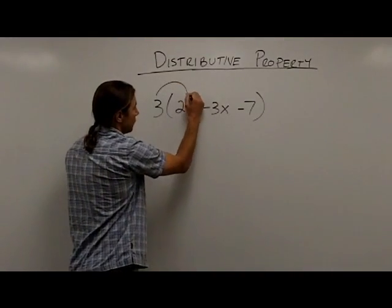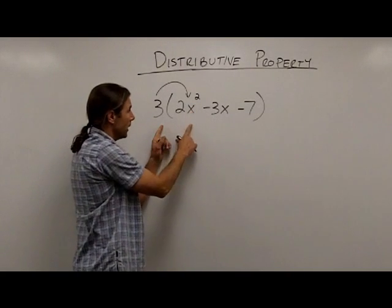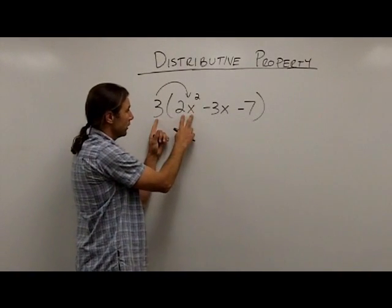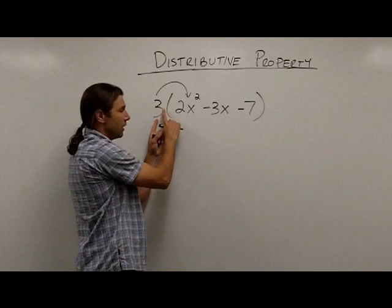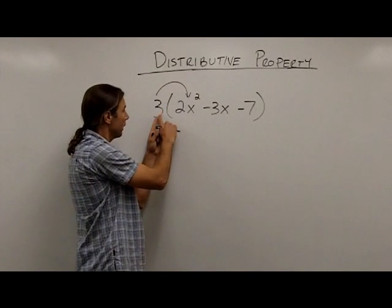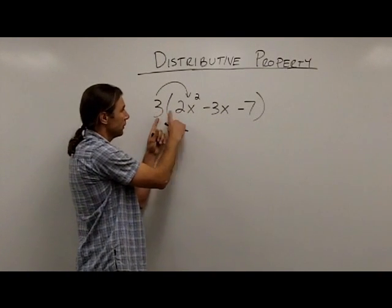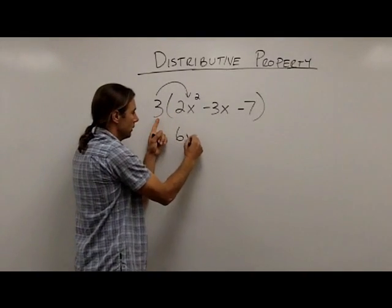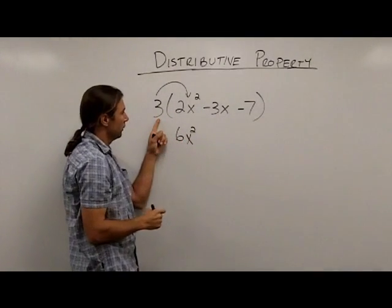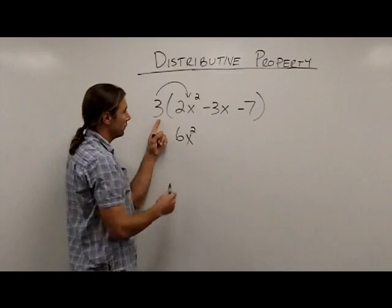First, I'm going to take the 3 and multiply it by the 2x to the second power. Well, 3 times 2x², I don't have any x variables here, so all I have to really worry about is multiplying the coefficients. So I would take 3 times 2 is 6, and I would just bring along the x². So when I finish that multiplication, I'll get 6x².